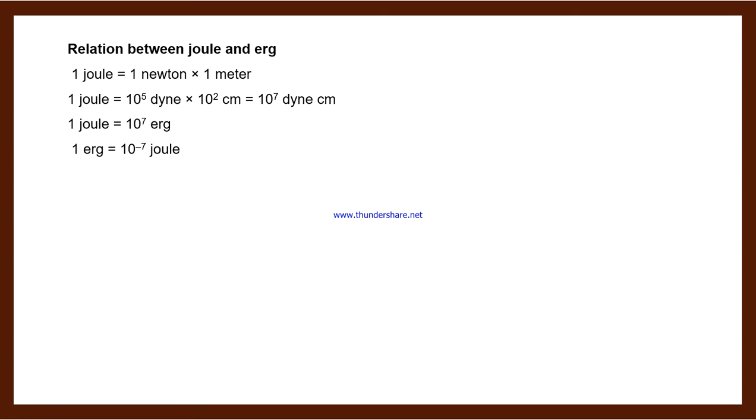Work done is said to be one erg when force is one dyne and displacement is one centimeter. Same formula: W = FS cos theta. F value is one dyne, S value is one centimeter, angle between both vectors is zero. So we get one dyne centimeter. So there are two types of units: SI unit and CGS unit.